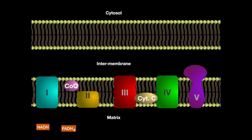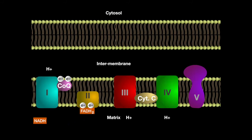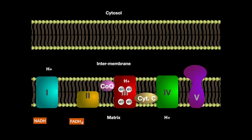NADH donates electrons to complex I, which pumps protons into the intermembrane space of the mitochondria. The electrons are then donated to coenzyme Q. FADH2 donates its electrons to complex II, which does not pump any protons. Coenzyme Q also accepts these electrons and transports them to complex III, which then pumps more protons into the intermembrane space.